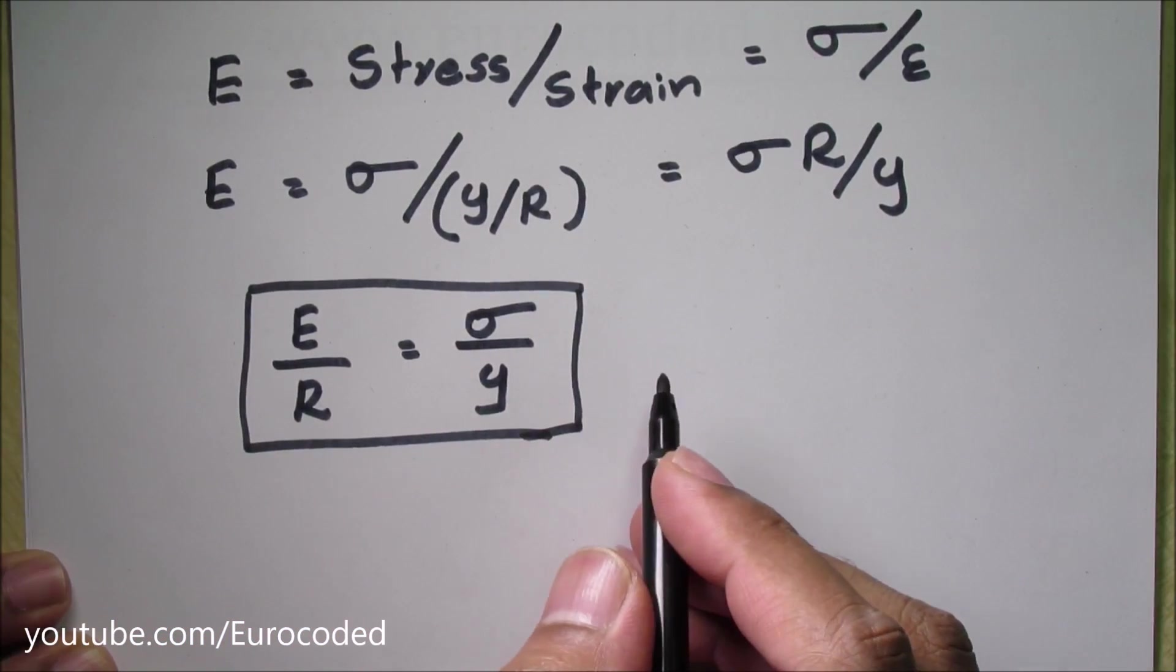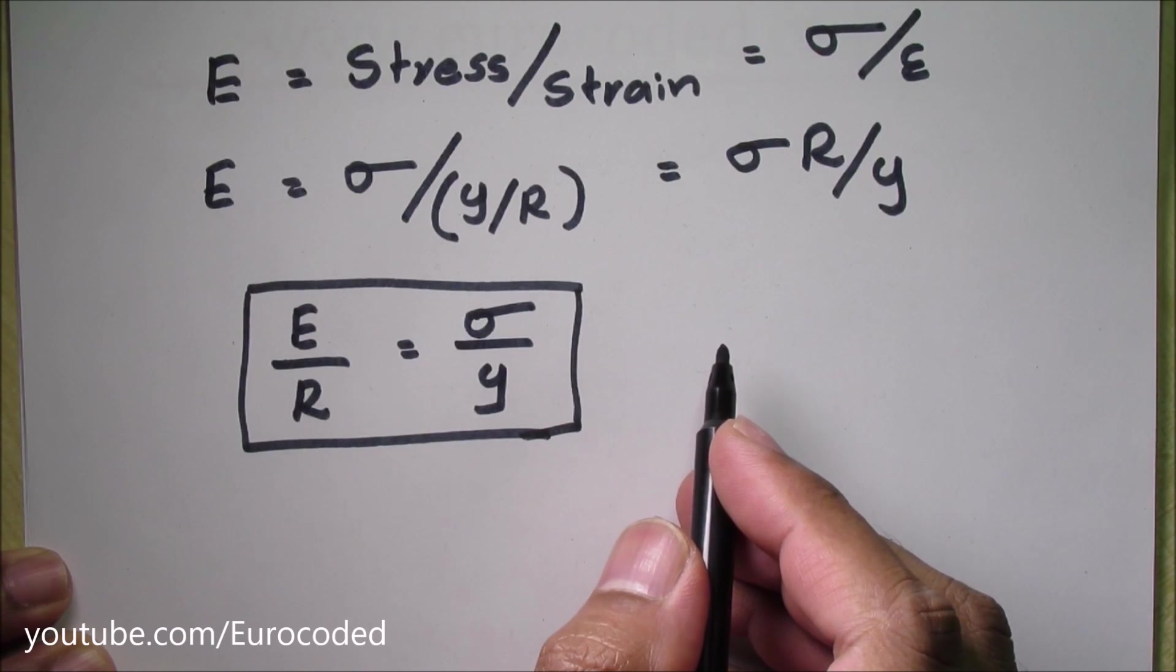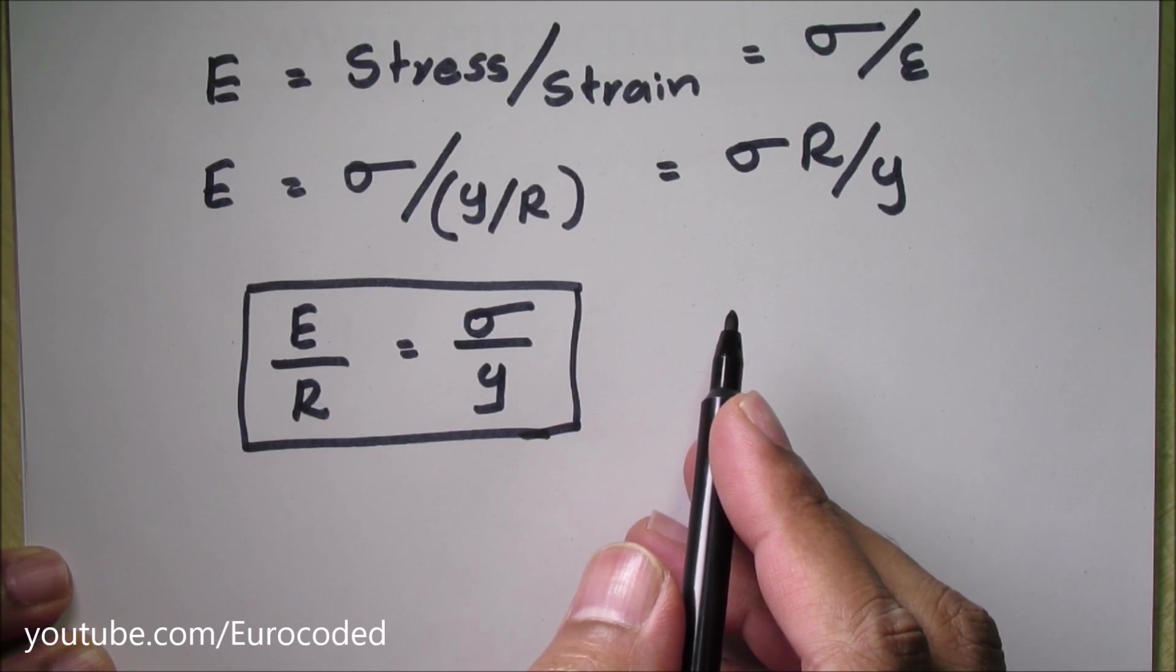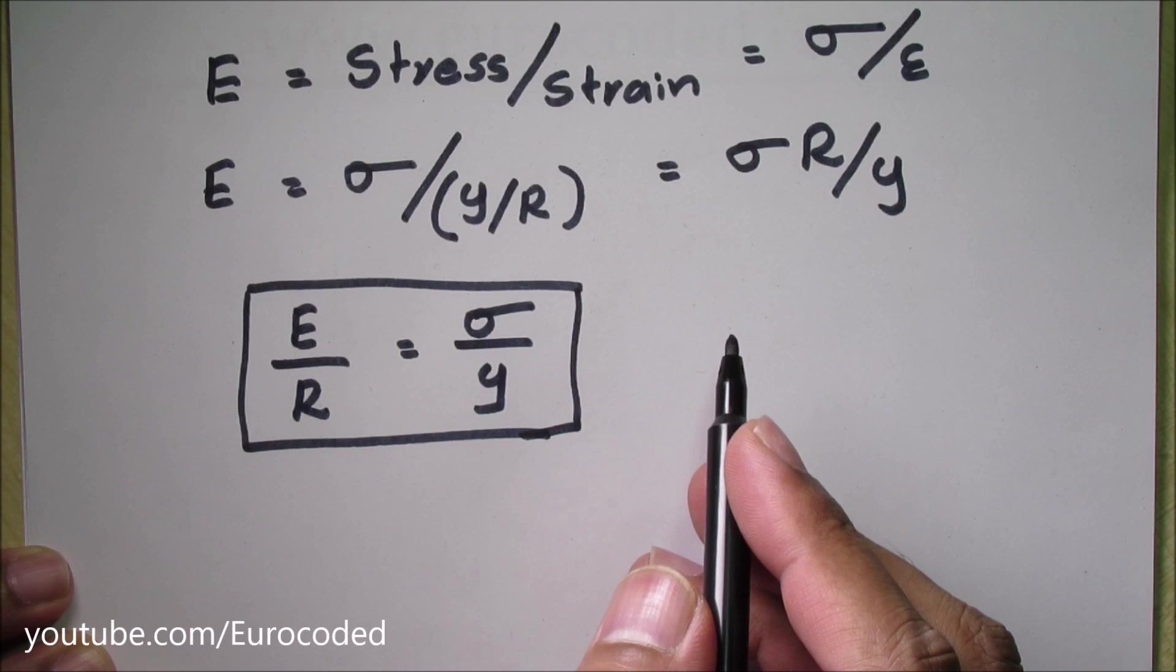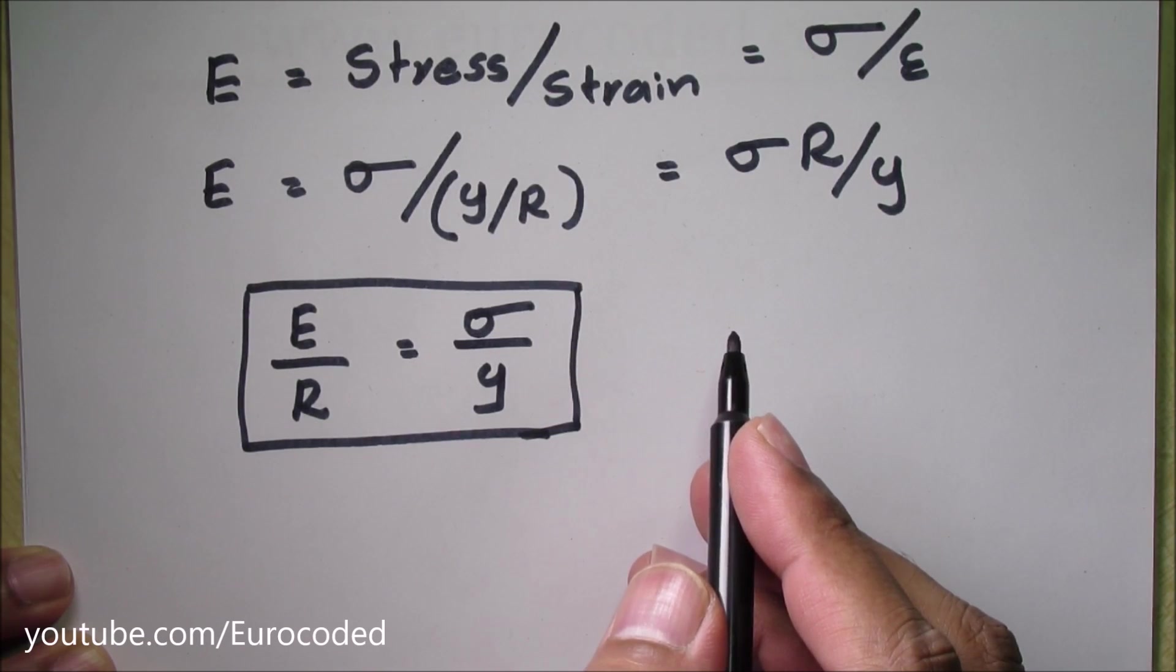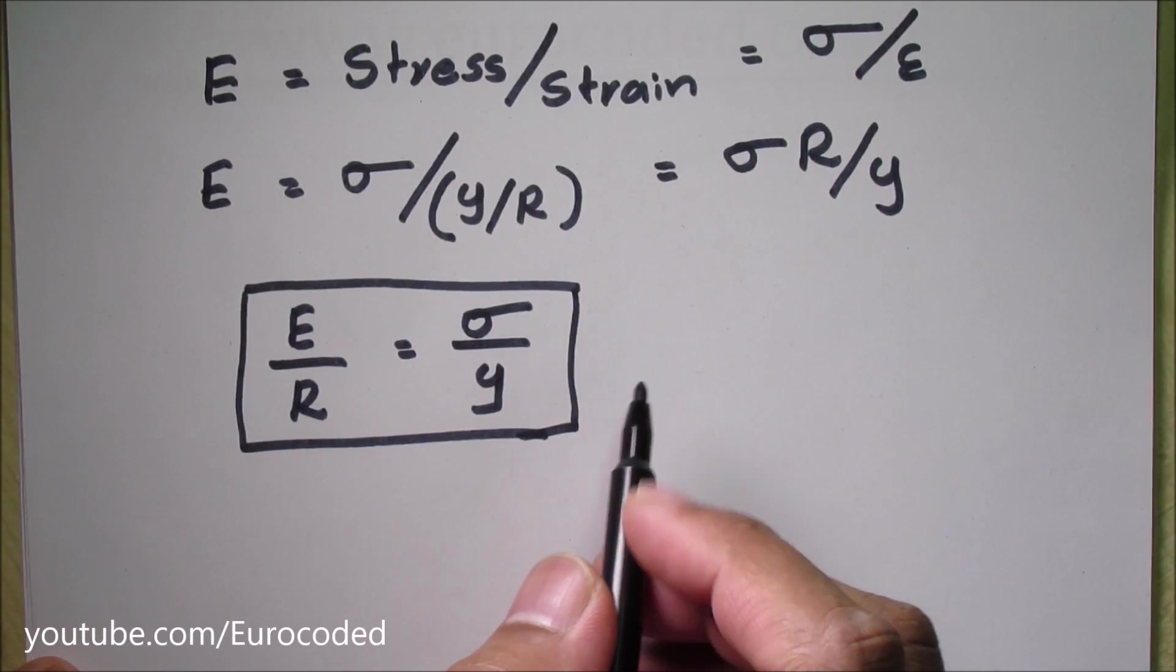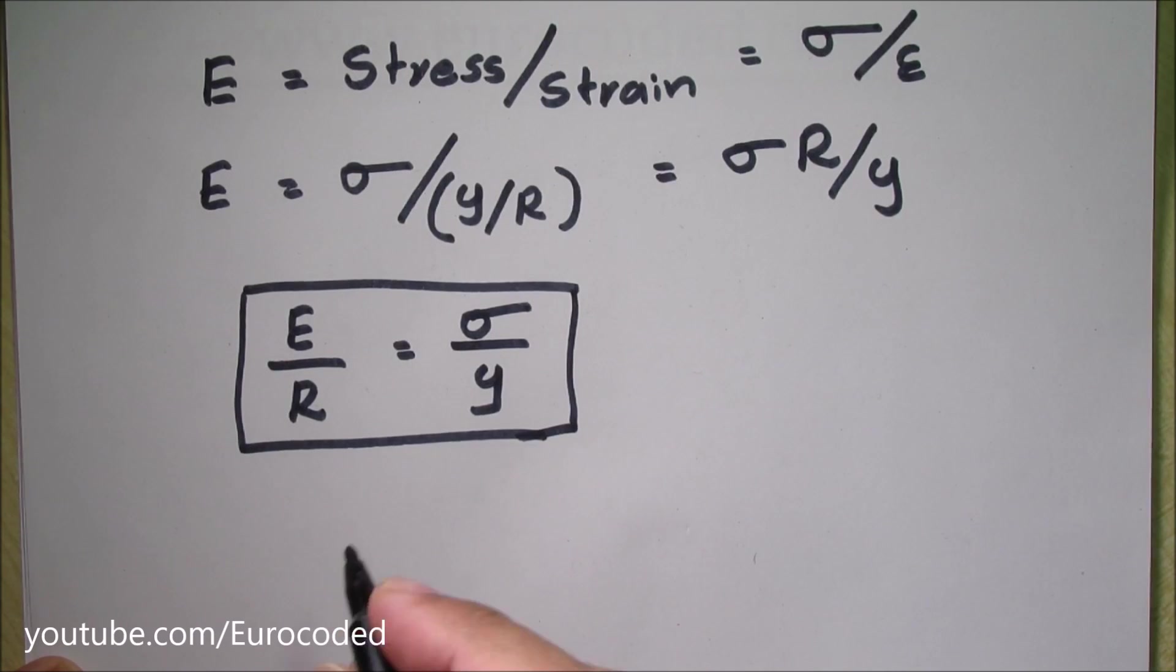I should highlight that in development of this equation, we have assumed that there are no lateral loads or stresses acting on the beam. In other words, the relationship between modulus of elasticity and stress strain was written for cases such as uniaxial tension. It is safe to assume this for most cases as the beams are relatively thinner compared to their lengths.